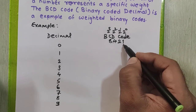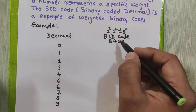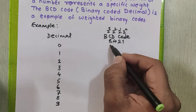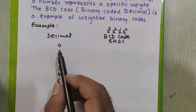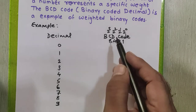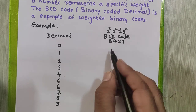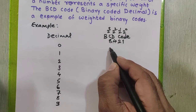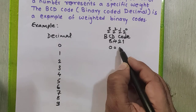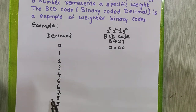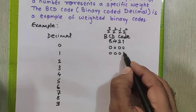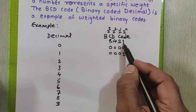The first place weight is 1, next is 2, next is 4, next weight is 8. Now to represent 0 in BCD, I have to use a 4-bit binary number. So the 4-bit binary for 0 is 0000. For 1 it is 0001. This is 1.